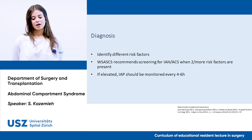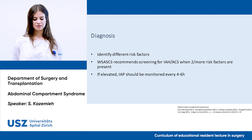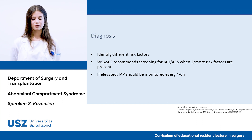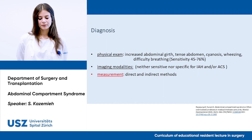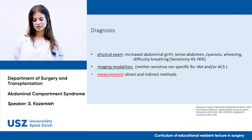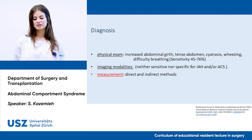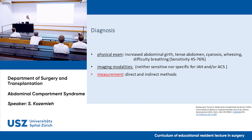For diagnosis, we need to identify the different risk factors. The World Society of Abdominal Compartment Syndrome recommends screening for IAH and ACS when two or more risk factors are present, and if elevated, intra-abdominal pressure should be monitored every four to six hours. Physical exam may reveal increased abdominal girth, tense abdomen, cyanosis, wheezing, or difficulty breathing, but this is not sensitive enough. Imaging modalities are neither sensitive nor specific. The most conclusive approach is measurement, which can be direct or indirect.